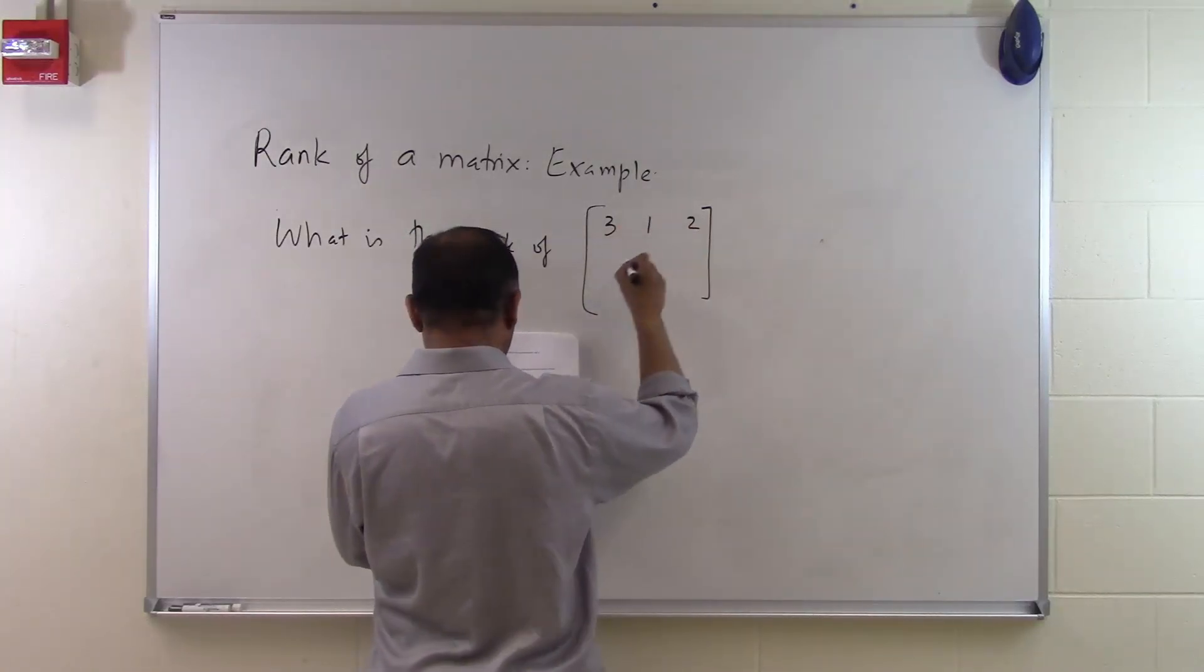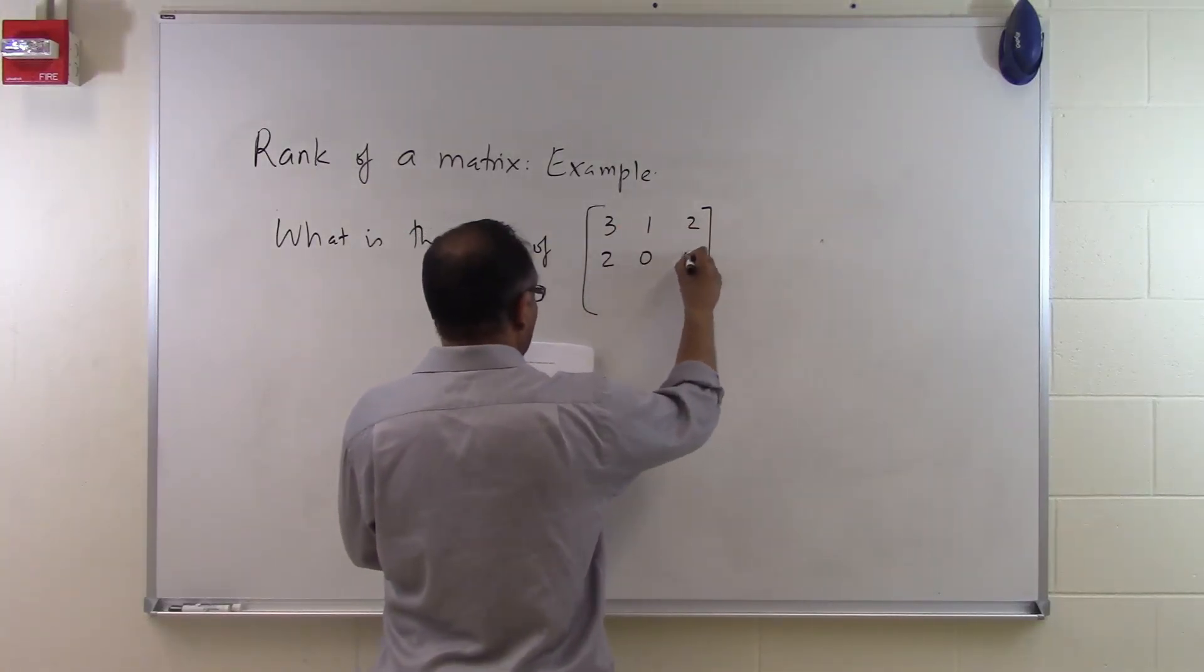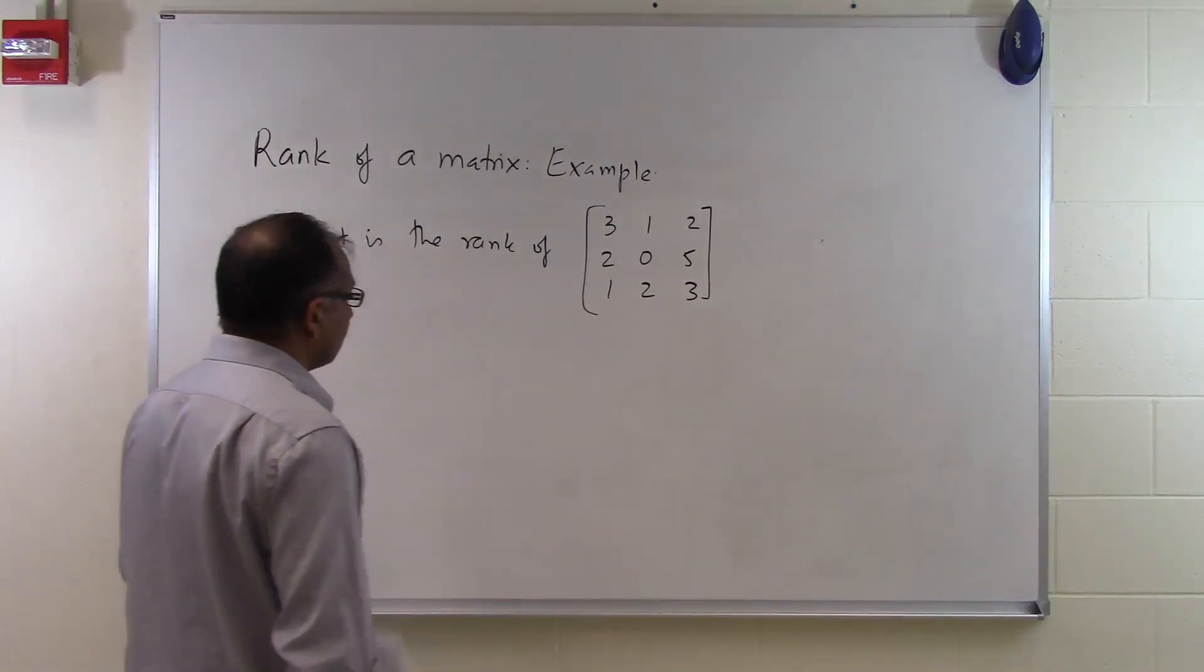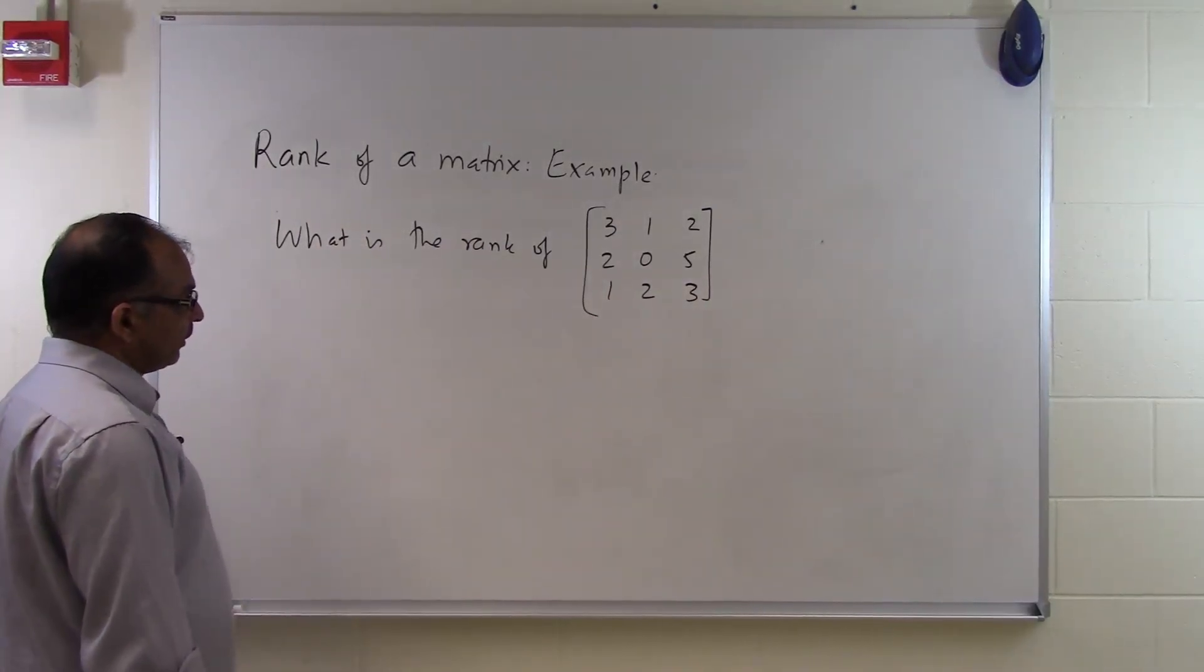The matrix is: 3, 1, 2, 2, 0, 5, 1, 2, 3. So right here, you can see there's a 3 by 3 matrix.